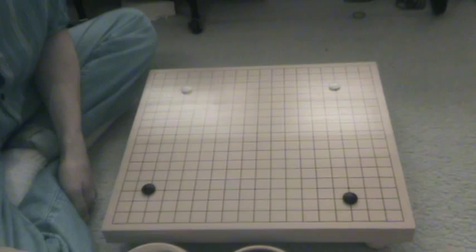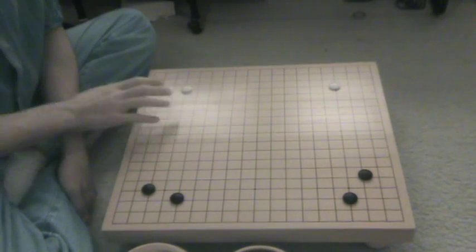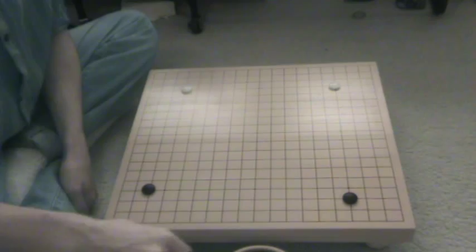the guideline is, make a shimari before approaching a corner, before approaching a star point. Alright, the difference is, in a star point, it takes two moves to get the whole corner.